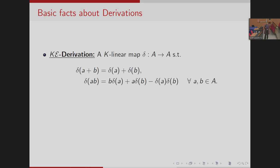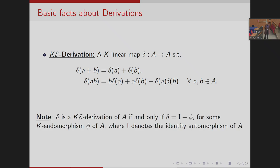These k_e-derivations have a very nice structure and we can easily classify them, because every delta is a k_e-derivation of A if and only if delta equals identity minus phi for some k-endomorphism phi of A. Using this, we can easily classify all the k_e-derivations of A.